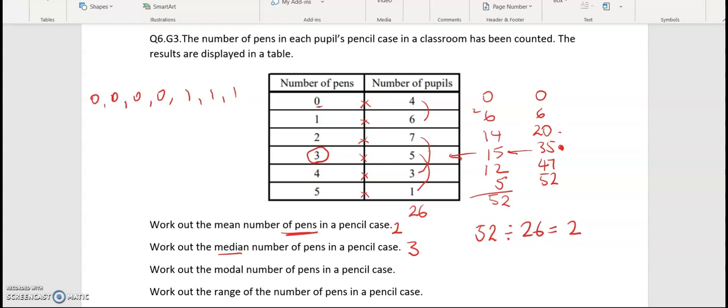Now we've got to work out the modal number of pens in a pencil case. So we're looking at the most common number of pens. So that is the more pupils have had that number. That's what we're looking to put in here. So looking at the number of pupils, the highest is 7. So the modal number of pens is 2 because 7 pupils had 2 pens each. Now we've got to work out the range of the number of pens in a pencil case. So what's the highest number of pens that the pupils could have? That was 5 and the lowest is 0. So 5 take away 0 equals 5. And that is the range.